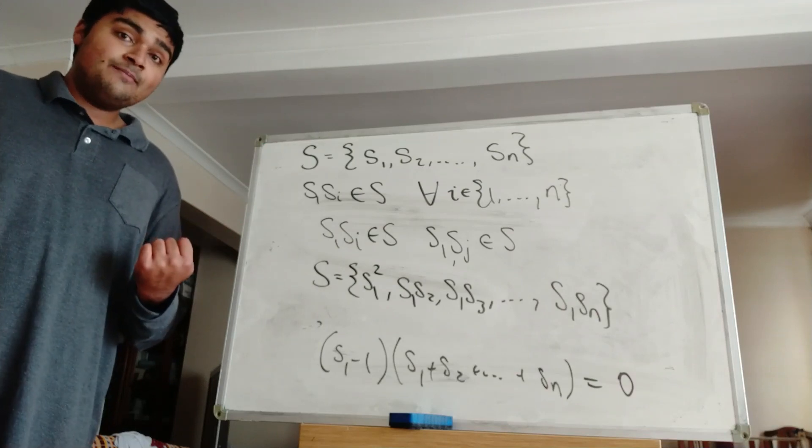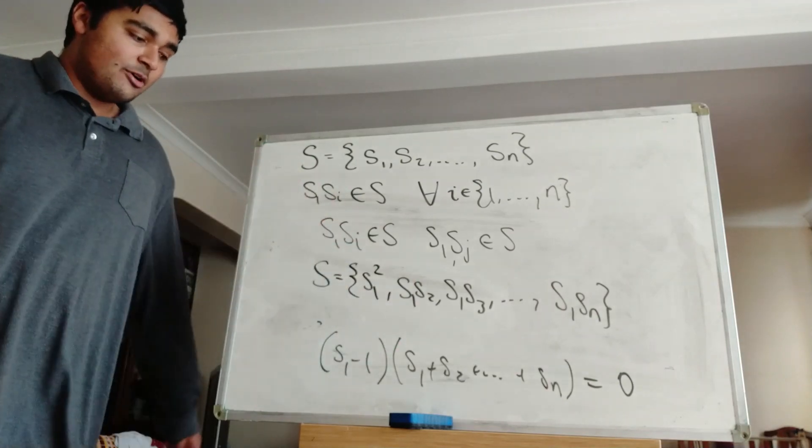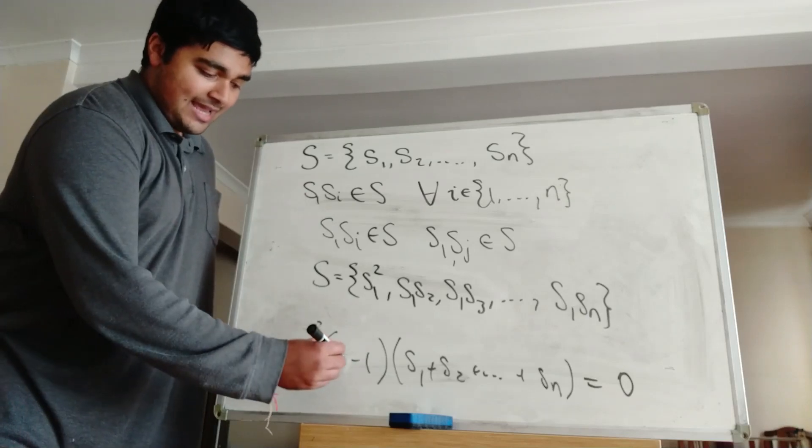So if S1 is equal to 1, then what we can do is just repeat the exact same argument, but instead replace this S1 here with, say, an S2.